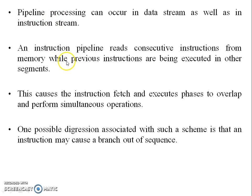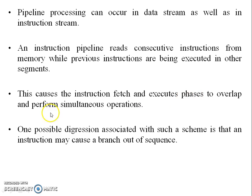An instruction pipeline reads consecutive instructions from memory while previous instructions are being executed in other segments. When one instruction is being executed in the first segment and then forwarded to the second segment, a new instruction will come into the first segment. This causes the instruction fetch and execute phases to overlap and perform simultaneous operations.